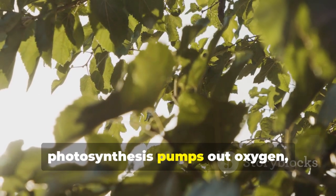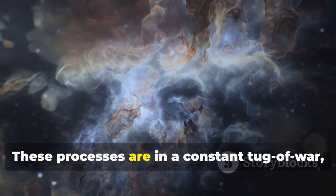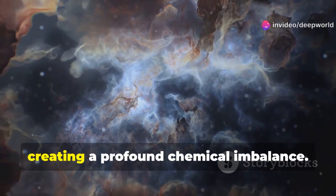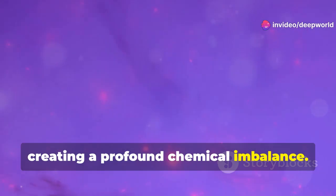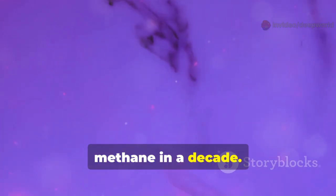On Earth, photosynthesis pumps out oxygen while microbes produce methane. These processes are in a constant tug of war, creating a profound chemical imbalance. Without life, oxygen would vanish in a few million years, methane in a decade.